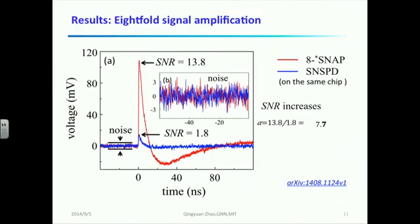I will show you some results of these multi-stage cascading detectors. First, I will show you the big pulse, which is our most primary motivation. We captured two pulses. The red pulse is from the 8-SNAP, and the blue pulse is from the SNSPD on the same chip. We can see the signal output from the 8-SNAP increase about eight times higher than the pulse from SNSPD. And the output noise is almost identical. So we calculated the signal-to-noise ratio. We can see there is a 7.7 times amplification of the signal-to-noise ratio by using our multi-stage cascading architecture to arrange nanowires.